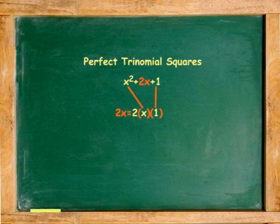x times x is x² and 1 times 1 is 1. The middle term, 2x, is twice the product of the square root of the first term, which is x, and the last term, which is 1.